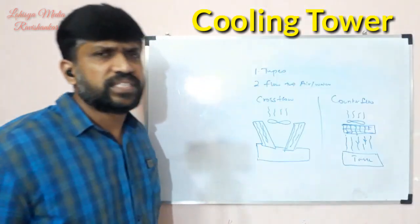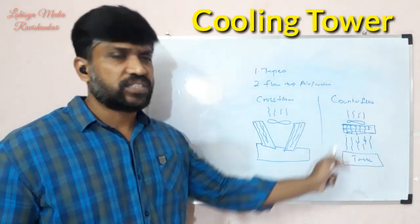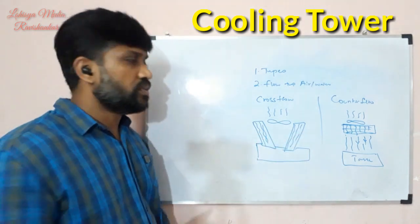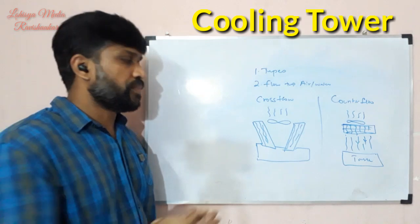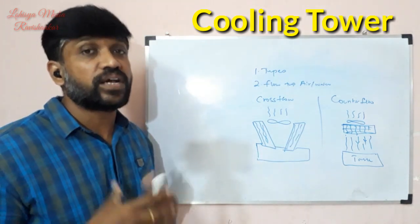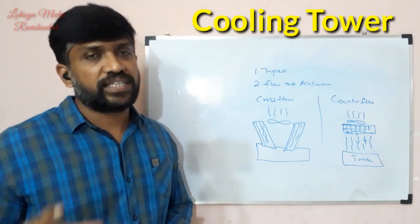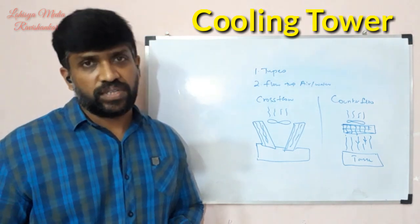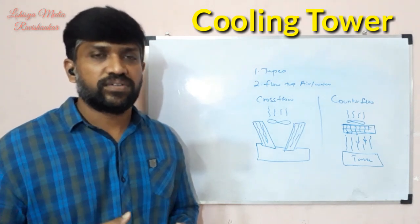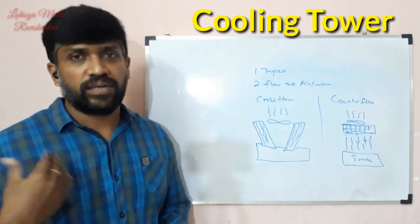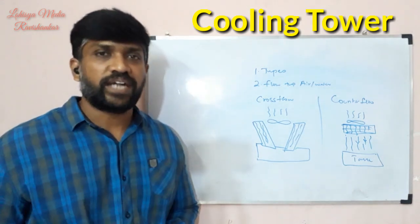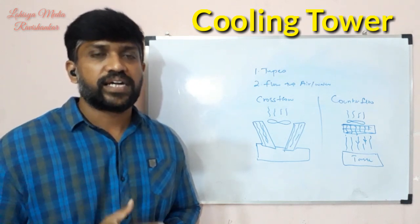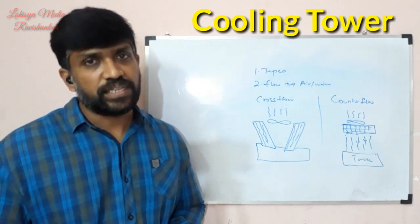Cooling towers are used in ice factories, milk factories, and power plants. We have covered the basic cooling tower as a waste-heat exhaust system. There are also water treatment systems in cooling towers. In this video, we covered the types of cooling towers. If you liked this topic, please like, share, and comment. Subscribe to our channel. Thank you.